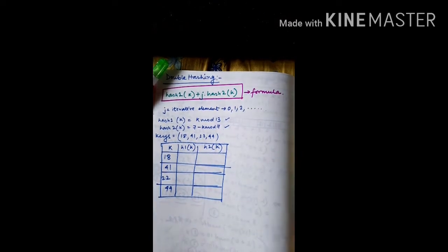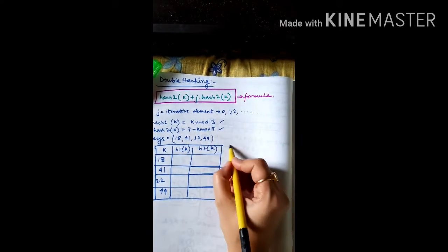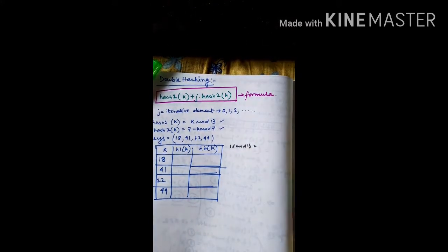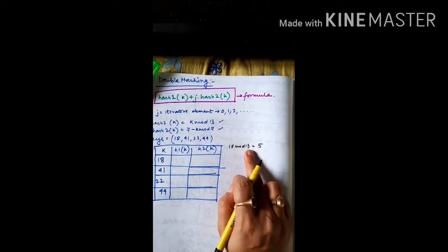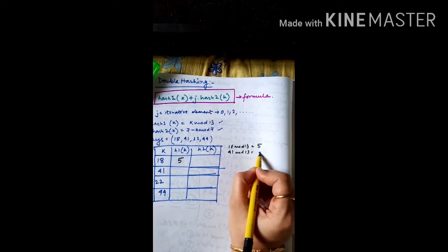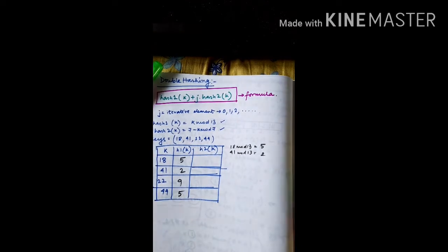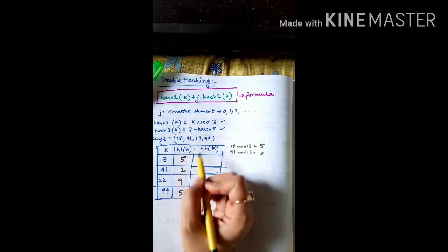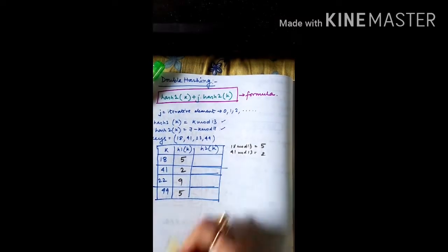For hash function 1, which gives k mod 13: 18 mod 13 gives a remainder of 5. 41 mod 13 gives a remainder of 2. 22 mod 13 gives a remainder of 9, and 44 mod 13 gives a remainder of 5. These are the four hash function 1 values for the respective keys.